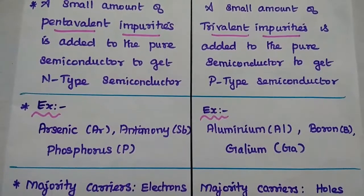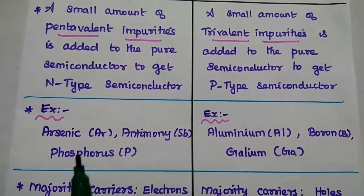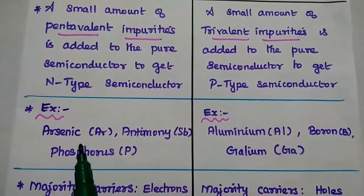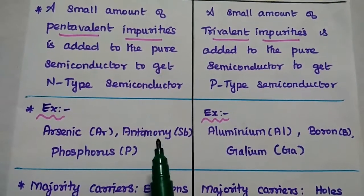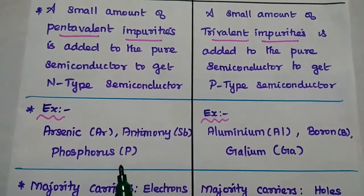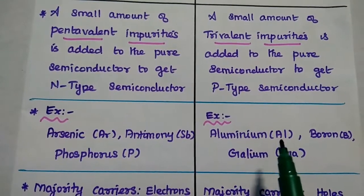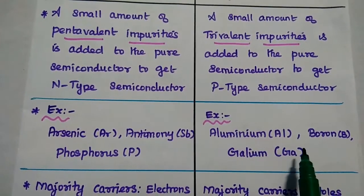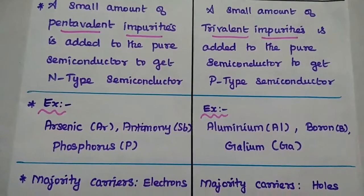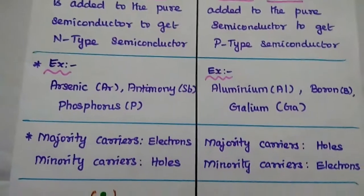Examples of pentavalent impurities are arsenic, antimony, and phosphorous. For trivalent impurities: aluminium, boron, gallium, and indium.